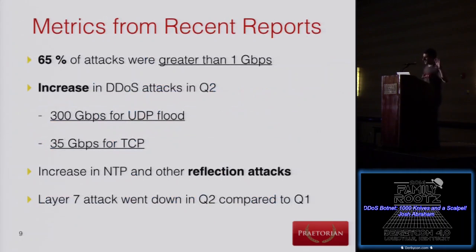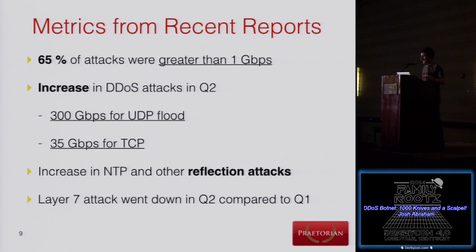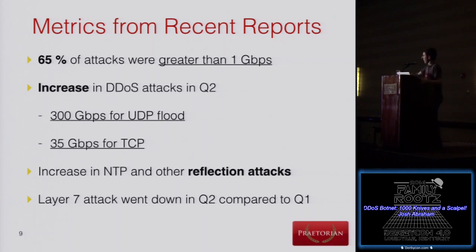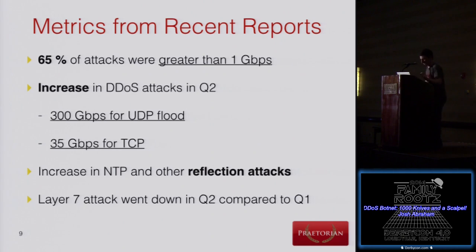Vulnerabilities are existing and being utilized to perform DOS. In terms of metrics from a recent DDoS report, we're seeing an uptick in certain vulnerability types. UDP floods are way up — 300 gigabits per second. This is where people are going for high bandwidth attacks, and we're going to talk about how that's actually conducted in the next section.